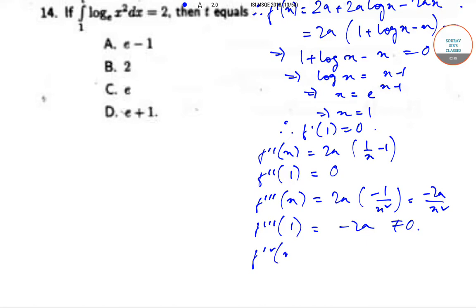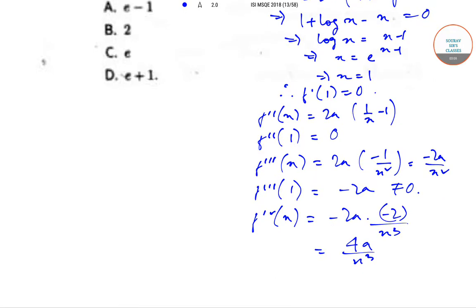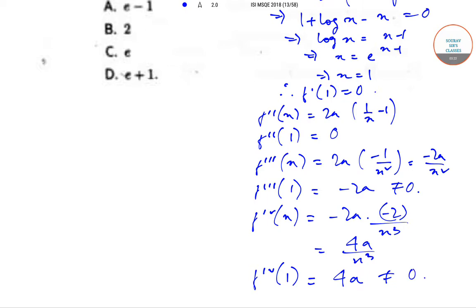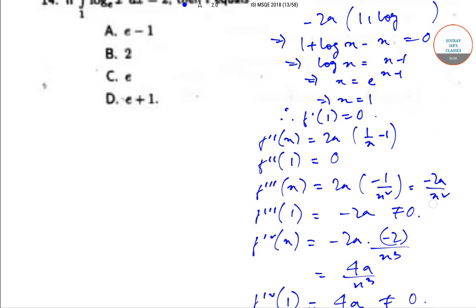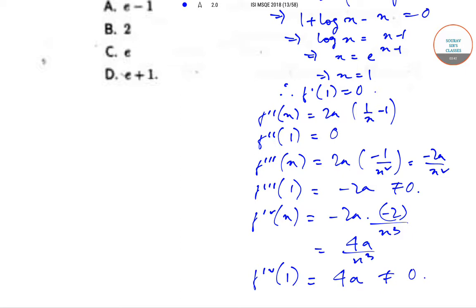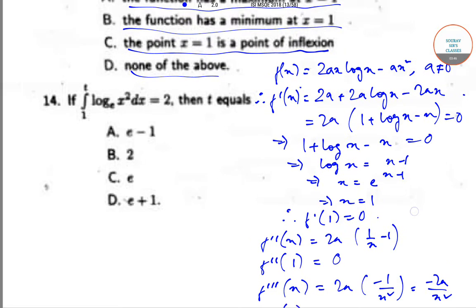We find that f'''(x) = 2a·(−1/x²) = −2a/x², and f''''(x) = −2a·(−2/x³) = 4a/x³. Therefore f''''(1) = 4a, which is not equal to 0. Since f'(1) = 0 but the analysis is inconclusive for maximum or minimum, we can definitively conclude that x = 1 is an inflection point. So option C is the correct option.